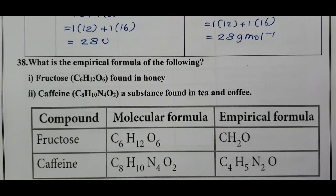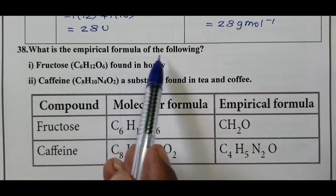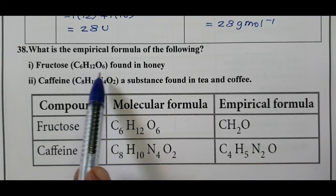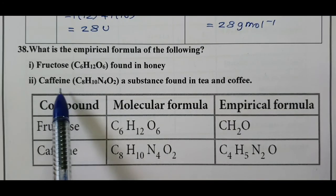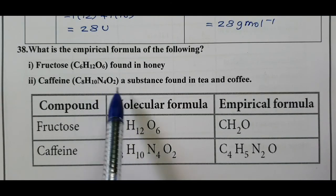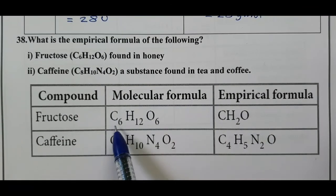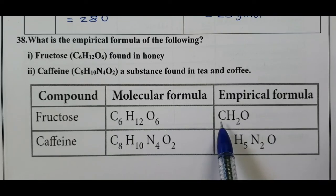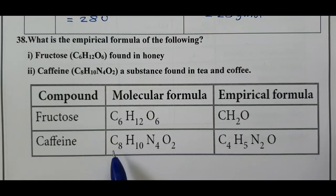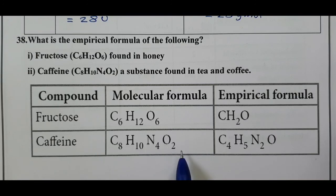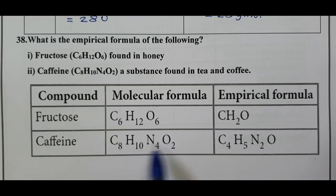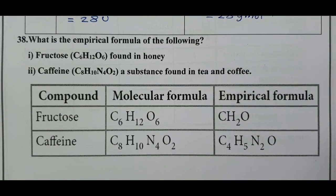Question number 38: What is the empirical formula of the following? Fructose has molecular formula C6H12O6. The common factor is 6; dividing all subscripts by 6 gives the empirical formula CH2O. Caffeine has molecular formula C8H10N4O2. The lowest common factor is 2; dividing all subscripts by 2 gives the empirical formula C4H5N2O. This completes questions up to number 38 in this video.